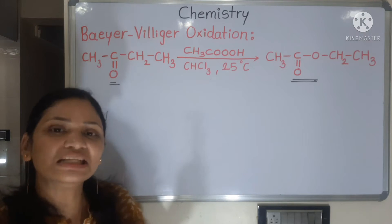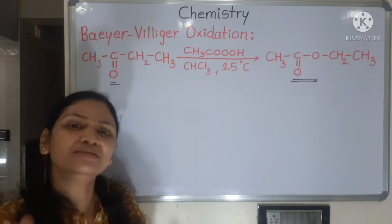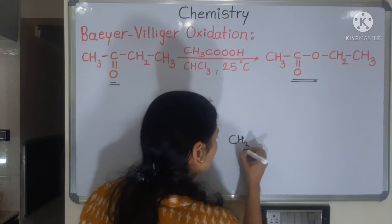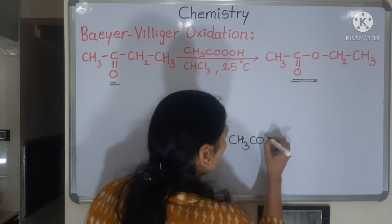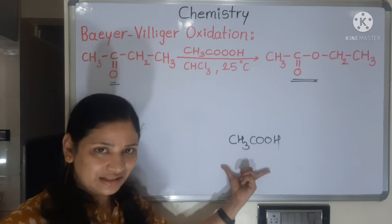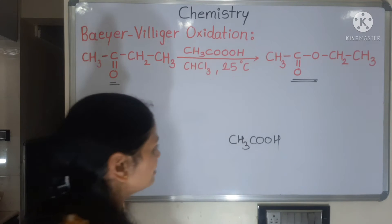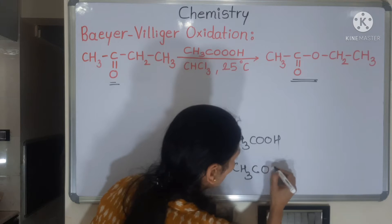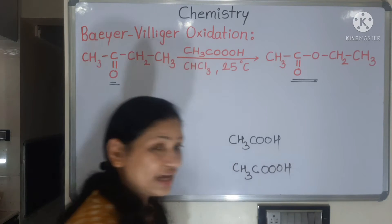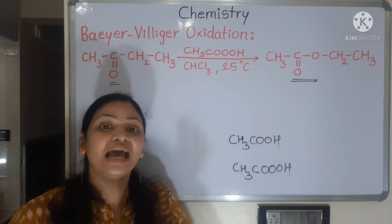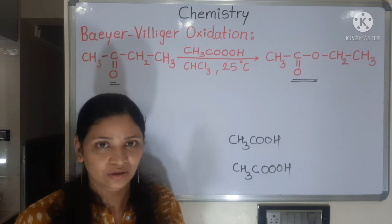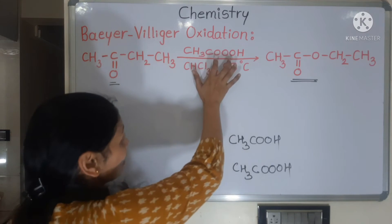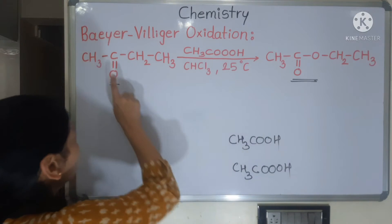What does peracid or peroxide mean? 'Per' means one extra oxygen. For example, if acetic acid is CH3COOH, then peracetic acid is CH3COOOH — it has one extra active oxygen that easily reacts and is easily available. So using such peracids, we convert the ketone.